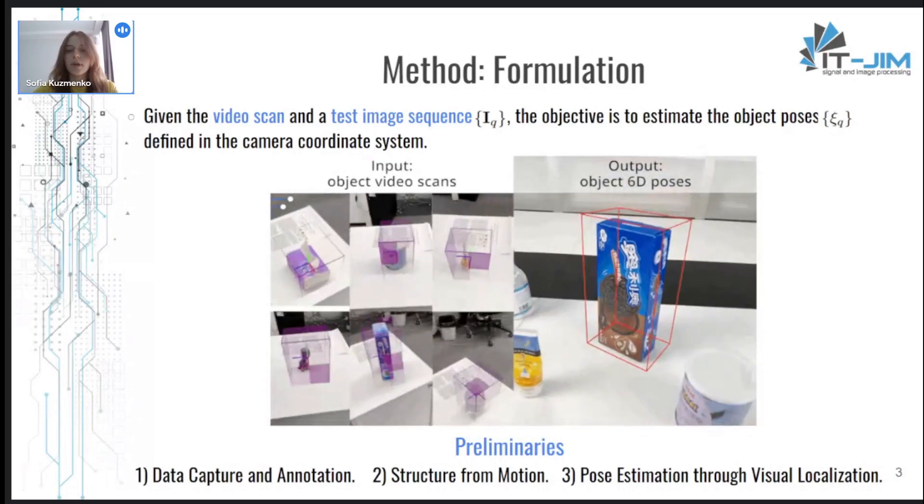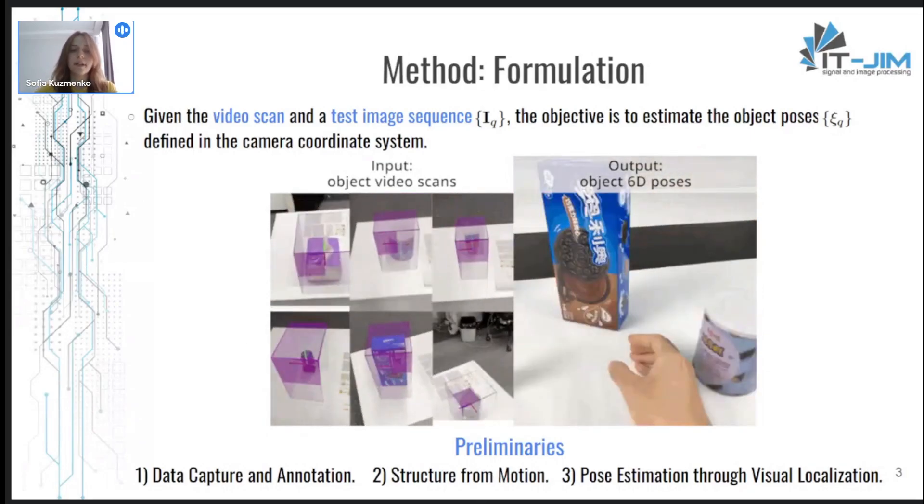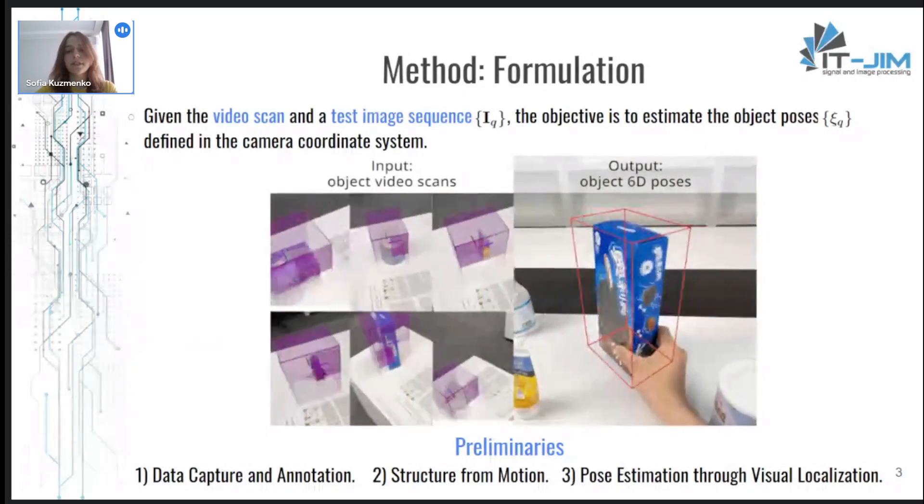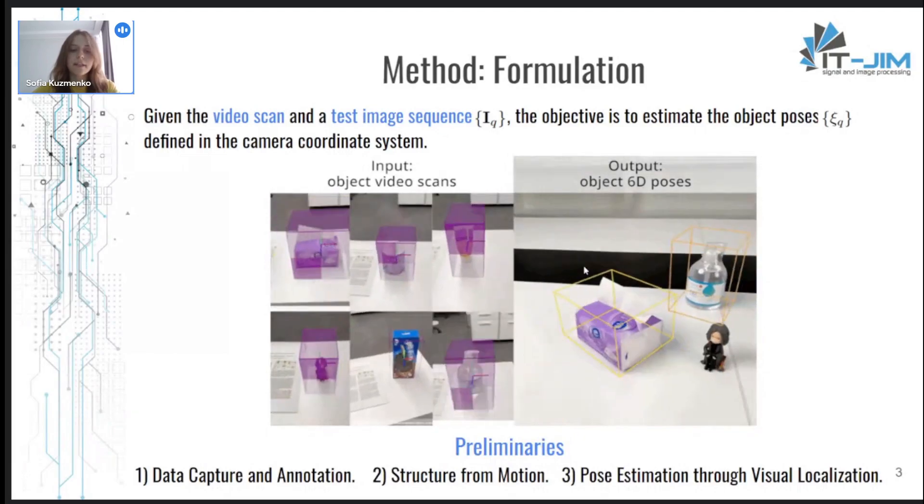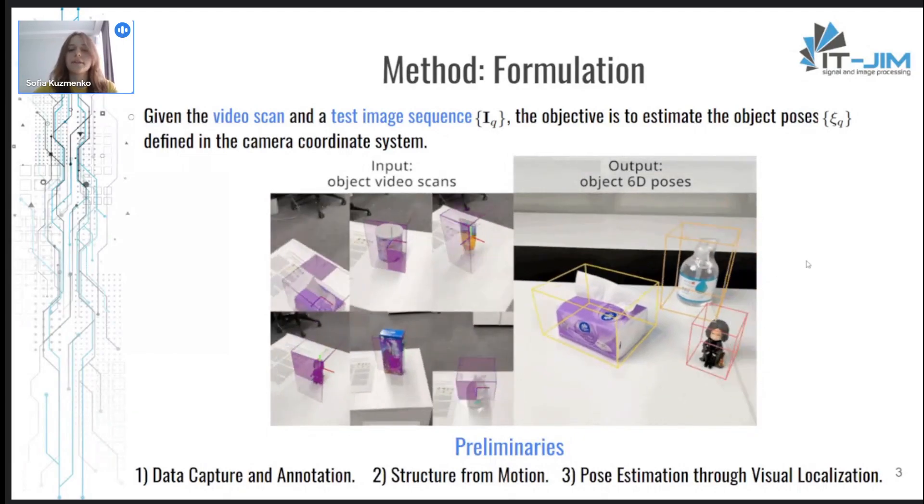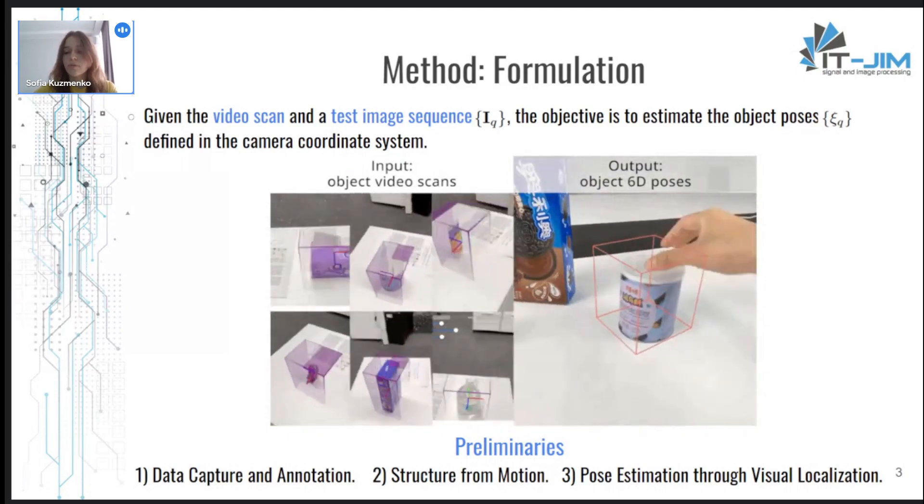So in order to estimate a pose of a specified object, it requires a video scan of the object and a test image sequence that leads to a need for several preliminaries which we will discuss one by one.